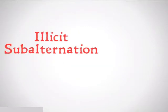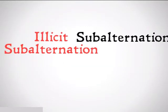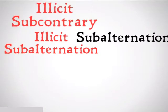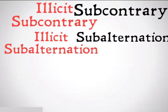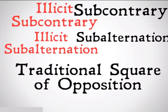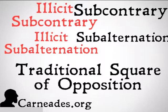That was the fallacy of illicit subalternation. Yesterday's fallacy was illicit subcontrary, and tomorrow we're going to cover the traditional square of opposition as we wrap up Fallacy February, a couple days late. Keep your eyes open for a couple more categorical logic fallacies at the end of the month. Watch a new video every single day for 100 days here at carnadies.org, and stay skeptical everybody.